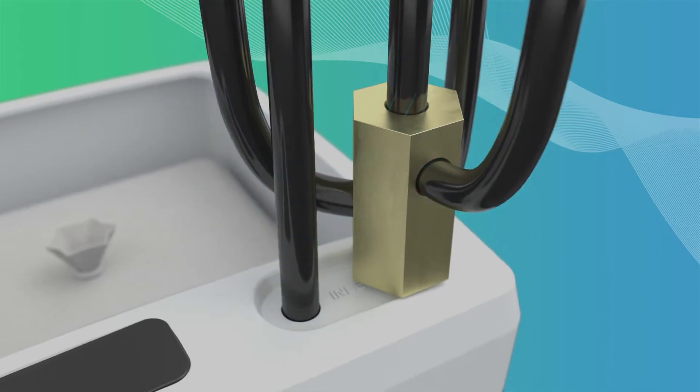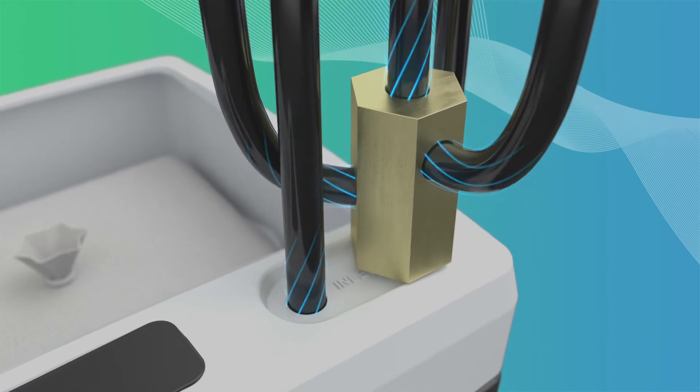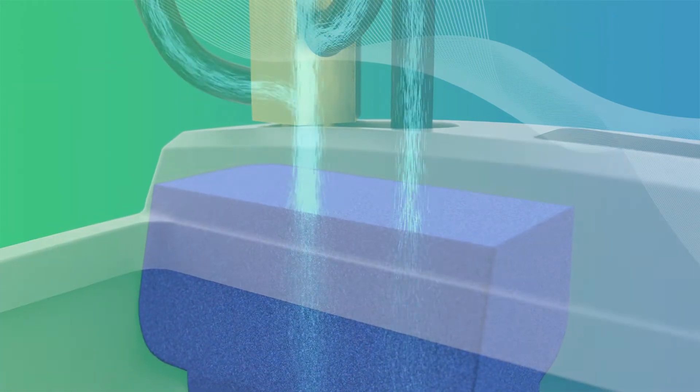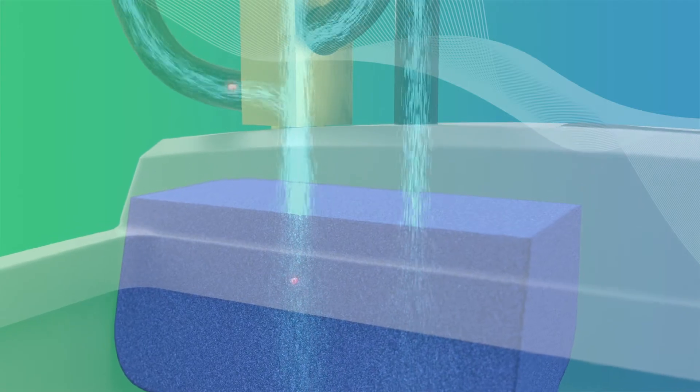First, the condensate enters the unit via one or more inlets. It passes through a diffuser, which already filters out the bigger solid particles.